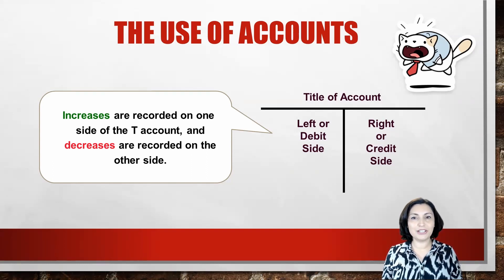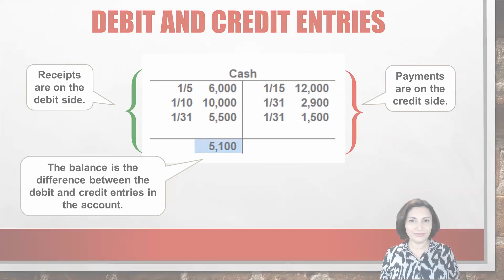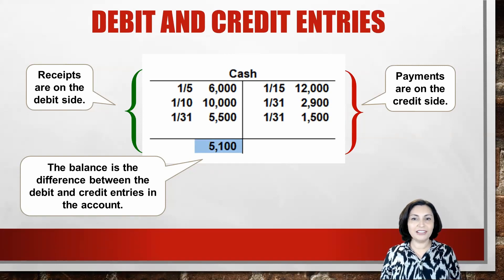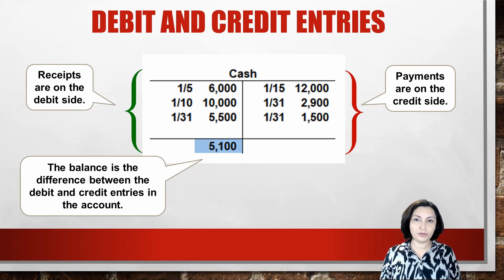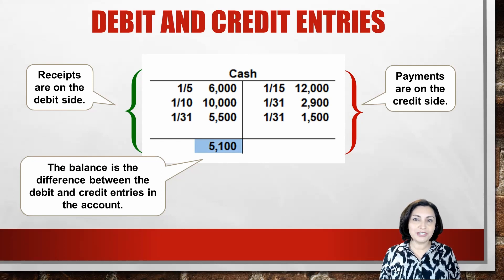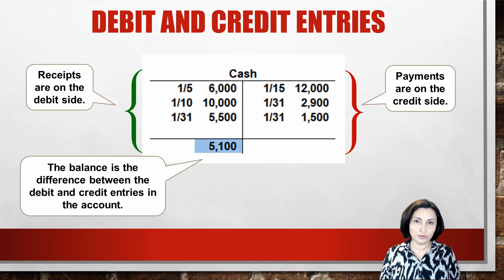Increases and decreases in an account balance are handled differently depending upon the nature of the account. Let's look at the example of a T-account for cash. Note that in accounting, cash is not just coins and banknotes — it can also be a checking or saving account. Here are the dates and amounts of transactions that impacted the cash account of our sample company. Because cash is an asset, and assets are increased by debit and decreased by credit, all receipts or increases should be placed on the debit or left side of the ledger account.